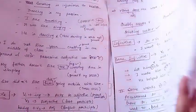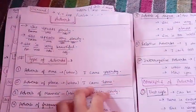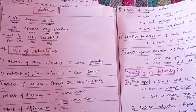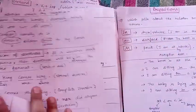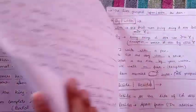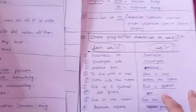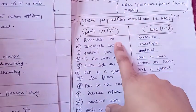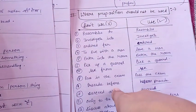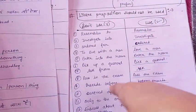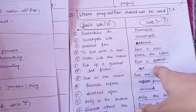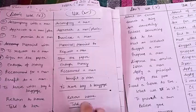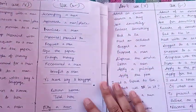I have made notes for adverbs as well — I have covered all the topics. These notes are around 35 to 40 pages in total. Then there are prepositions, and I have also written where a preposition should not be used. These are the words with which prepositions are not used, and here are the words with which prepositions are used. I have made a whole table for this.